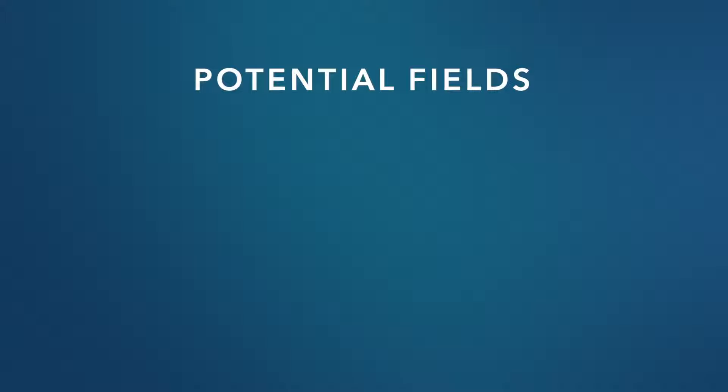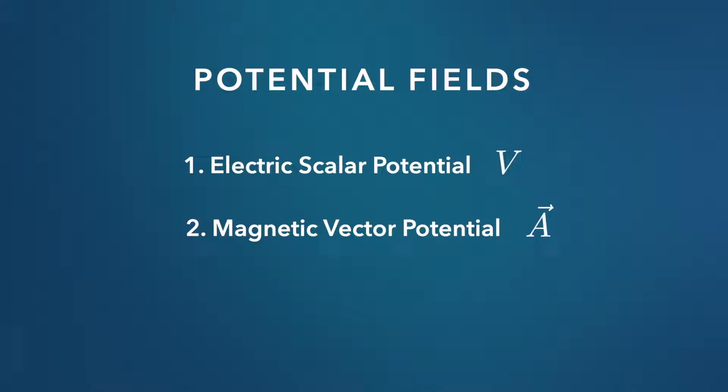There are three main potential fields that are used in physics. One, the electric scalar potential, more commonly known as voltage. Two, the magnetic vector potential, which is like a kind of electromagnetic momentum flow. And three, the gravitational scalar potential, which in Einstein's theory of relativity determines the rate of time. So these are the three potential fields that give rise to the electric, magnetic, and gravitational force fields that we know. Let's take a closer look at how that happens.